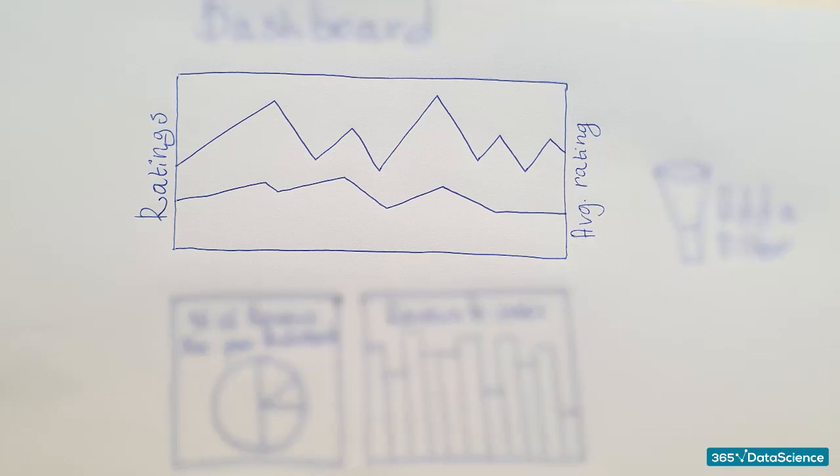A chart showing us the number of reviews, with the second axis measuring the monthly average score.